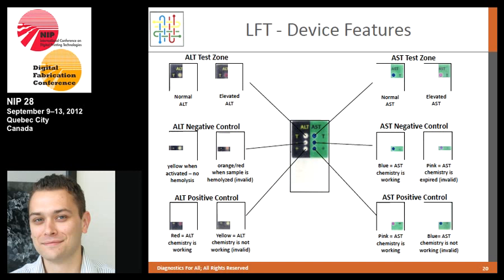Each spot on the device serves a specific function. The ALT test shows yellow for normal and red for elevated; AST shows blue for normal and pink for elevated. Controls confirm the sample is in good shape. One example is hemolysis, which occurs in about 5% of samples — red cells lysing release red color into the test zone, which could throw off the ALT assay. A dedicated indicator spot addresses this: if it's yellow, there's no hemolysis and the sample is fine; if orange or red, you need to redo the test. These simple indicators provide important feedback to the user.